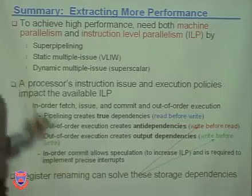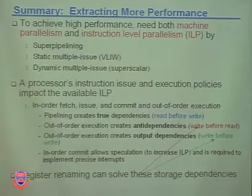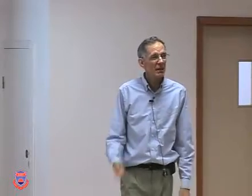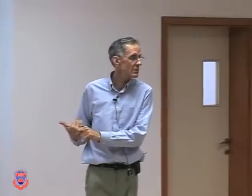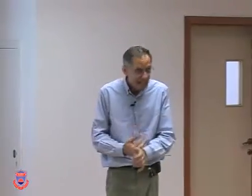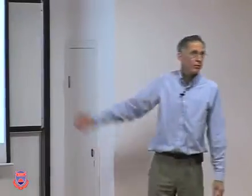To summarize: extracting more performance - this is the wrap-up of this section of chapter four. The processor's instruction issue and execution policies affect available ILP. We have in-order fetch, issue, and commit with out-of-order execution. Out-of-order execution creates anti-dependencies and output dependencies. In-order commit allows speculation required for precise interrupts. Register renaming can solve anti and output dependencies - nobody can solve true dependencies. We've come up against the brick wall on true dependencies, but register renaming gets us out of trouble on the others.